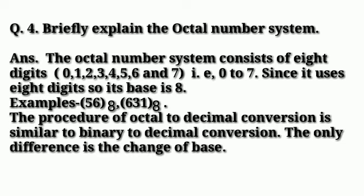So in octal number system we have 8 digits 0 to 7 and its base is 8. And if we want to convert an octal number into decimal number, then we have to divide it by 8 until we get 0 as the quotient. So its process is the same, only we have to replace 2 with 8.